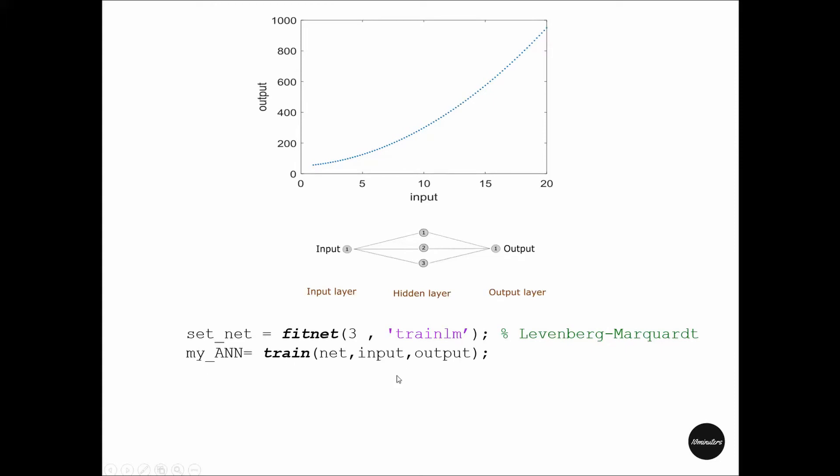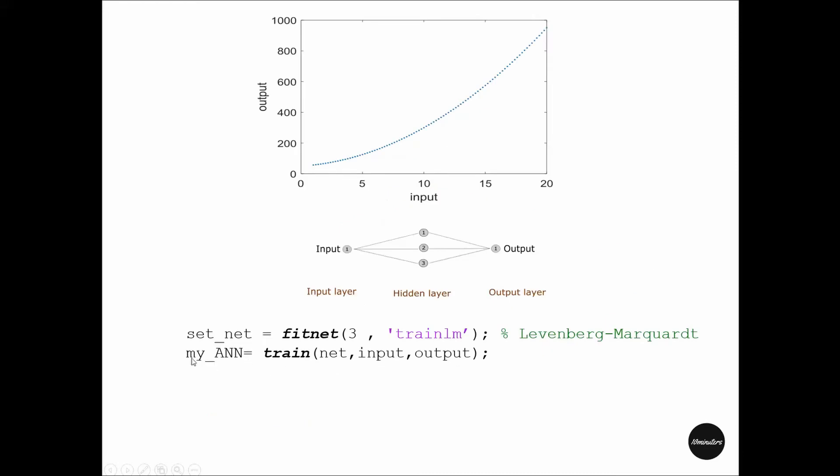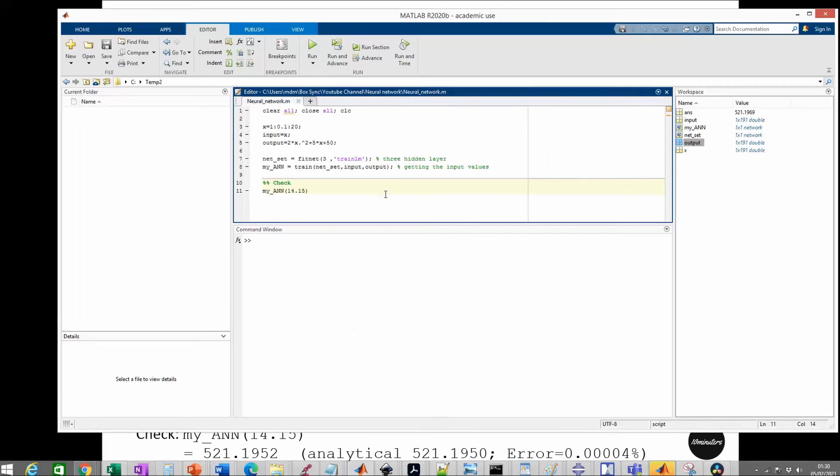After training, he has a trained artificial neural network. If he is asked to get the y value for any x value not present in this set of points, he can use the my_ANN function to provide that y value for the given x. Let's see in more detail how he will perform this.